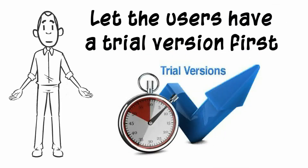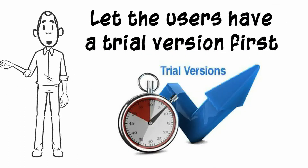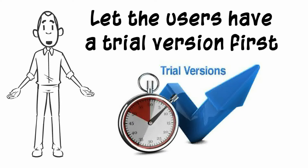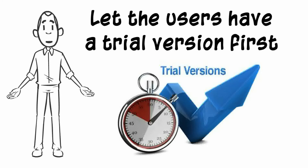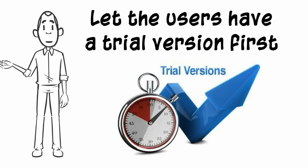Step 4: Let the users have a trial version first. This is one of the best ways to almost completely secure your software. You can initially provide a trial version where most of the important functionalities are disabled.